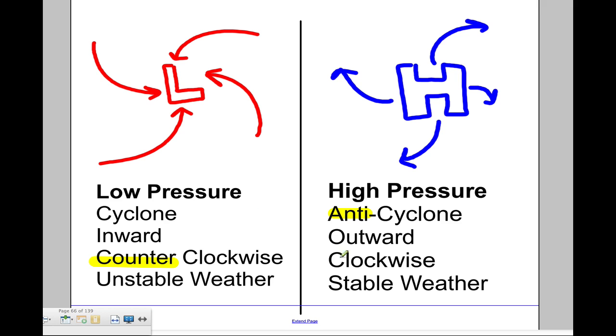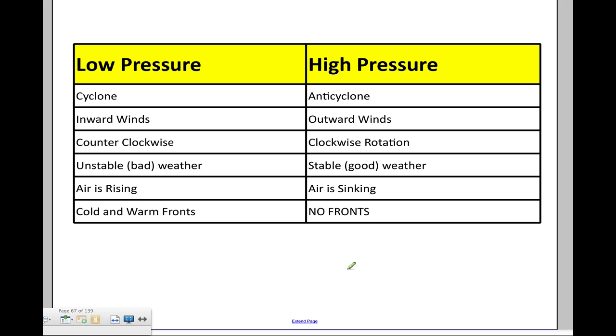So for your notes, make sure you have this information. These are the major facts. Low pressures are called cyclones. The wind blows inward in a counterclockwise direction, and the weather is unstable. High pressures are anticyclones, outward in a clockwise direction, and they bring stable weather. Here's the same thing in a nice chart. You should have this in your notebook.